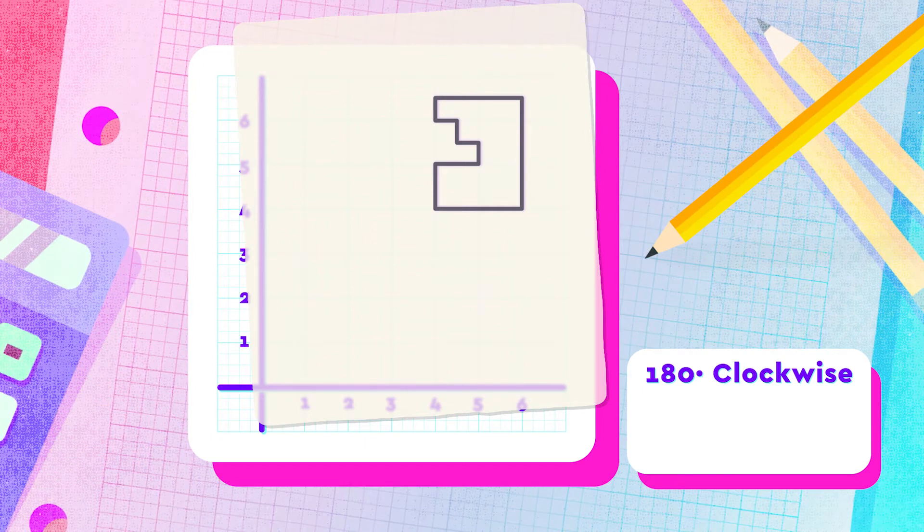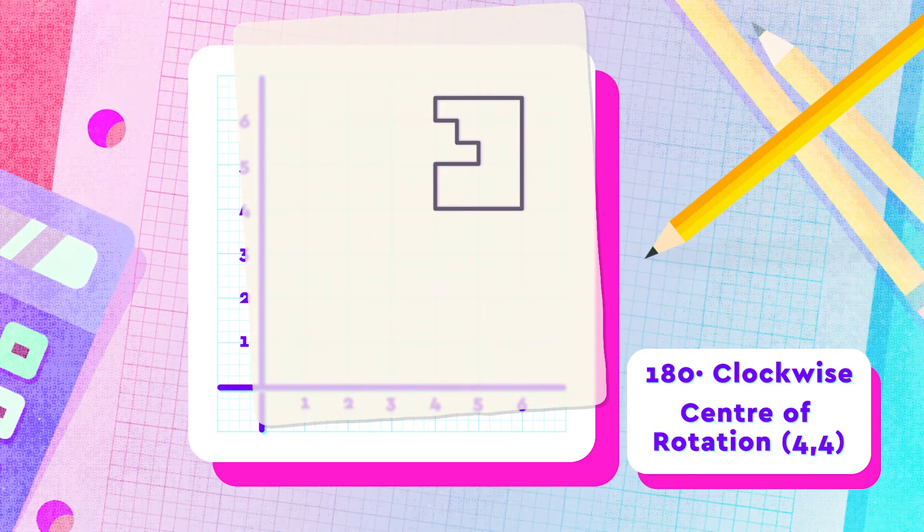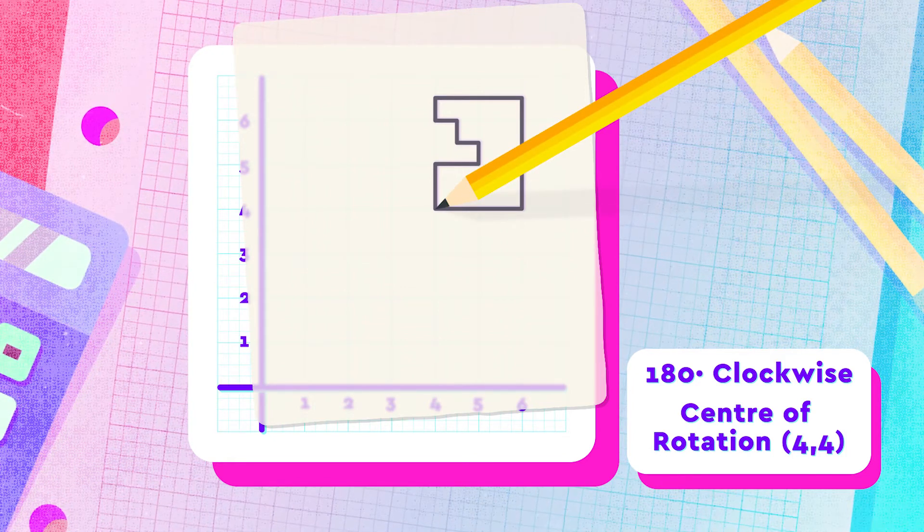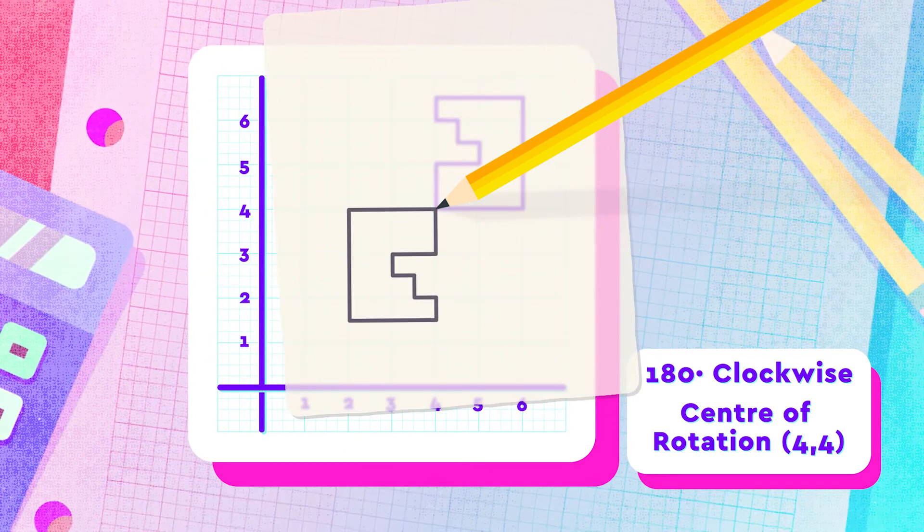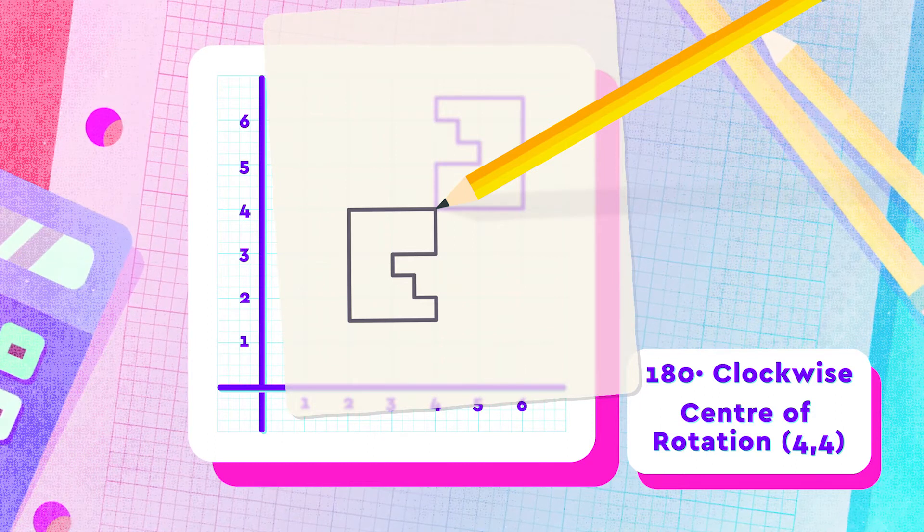Third, locate the point that is the center of rotation and place the pencil over this point. Fourth, we now turn the tracing paper, keeping the pencil firmly in place, in the direction and amount of degrees that the question has asked for.